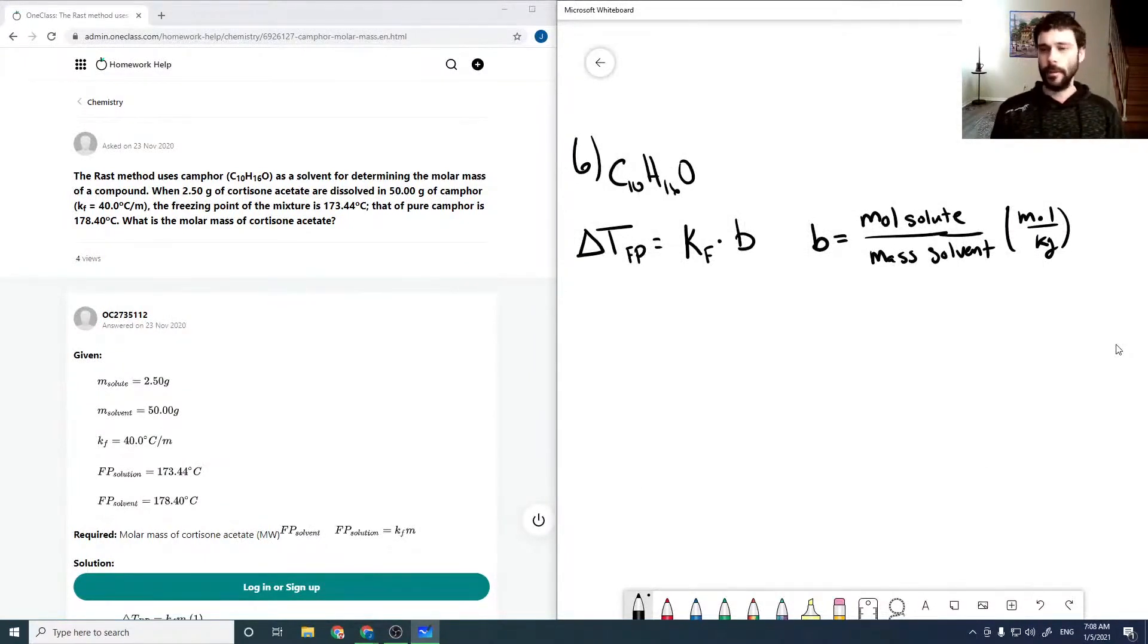So our Kf, or M I should say. So the M in our Kf constant, our Kf is given as 40.0 degrees Celsius per M, or 40.0 degrees Celsius per mole per kilogram.